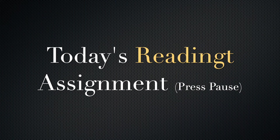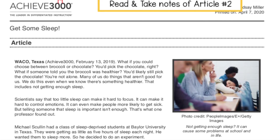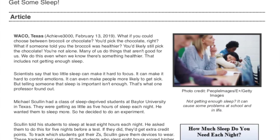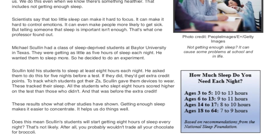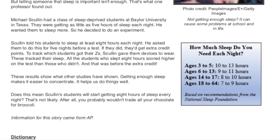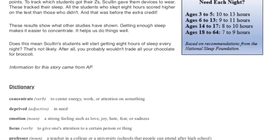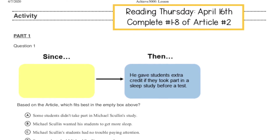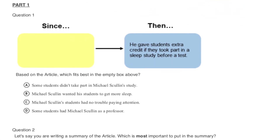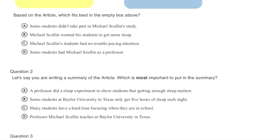Oh, six, twelve, eighteen, twenty-four, thirty and thirty-six, forty-two, forty-eight, fifty-four, sixty, sixty-six, seventy-two. Am I surprising you? Counting by six all the way through.